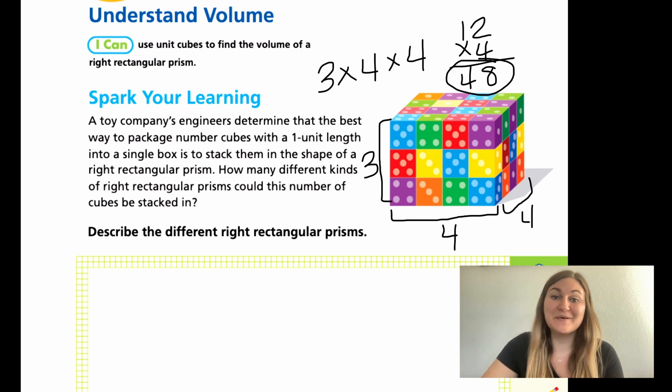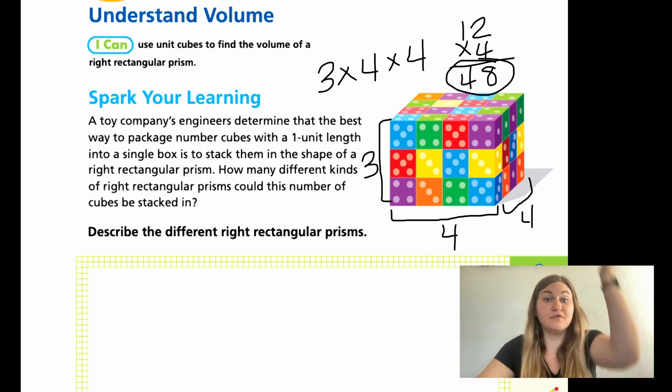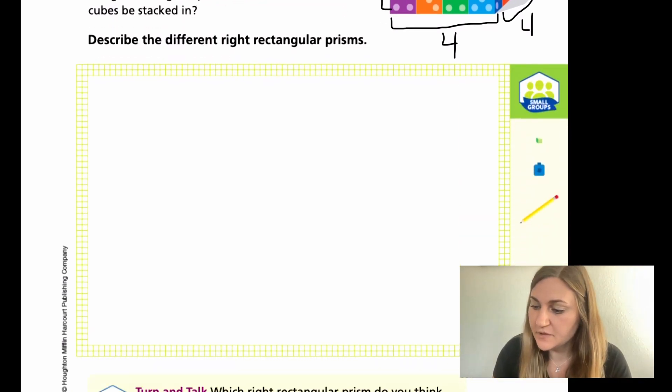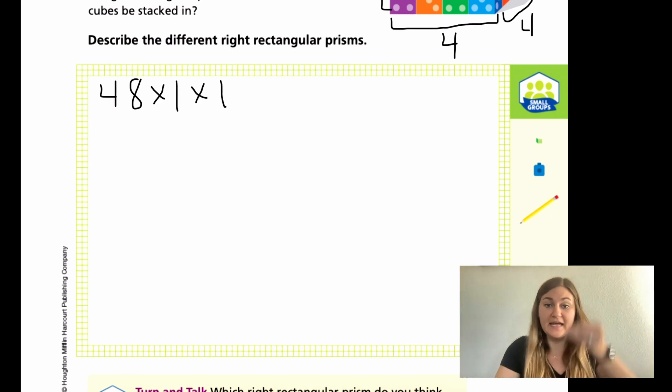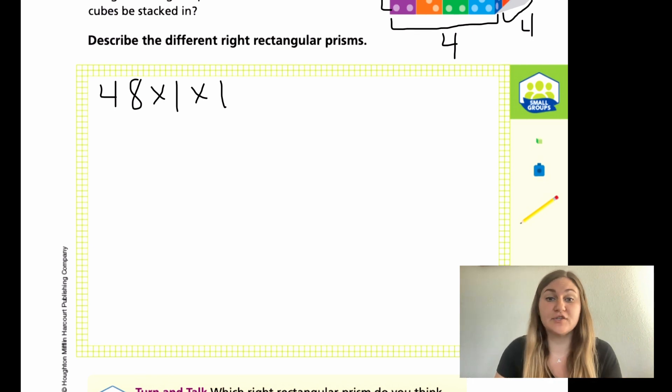The first thing and the most ridiculous thing that comes to my mind is doing 48 tall, just one cube right on top of each other. So what that would look like is doing 48 by 1 by 1. So 48 is the height and then the length and the width is just 1, because they're all on top of each other. That's my starting point.